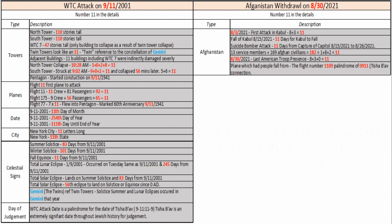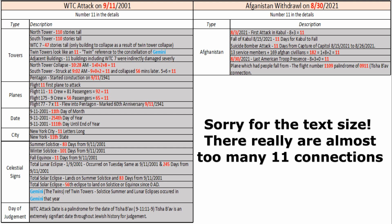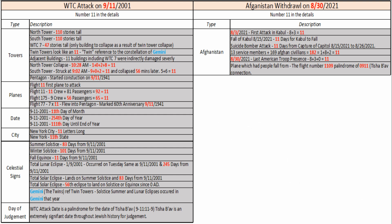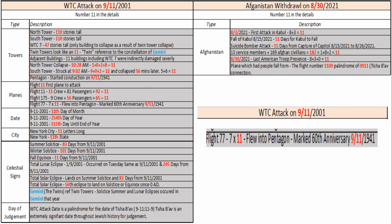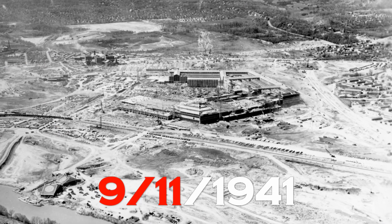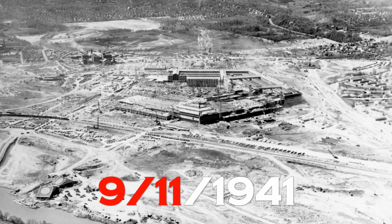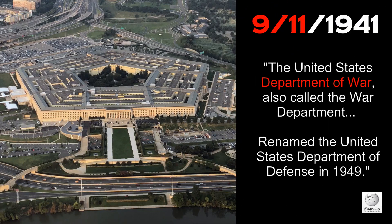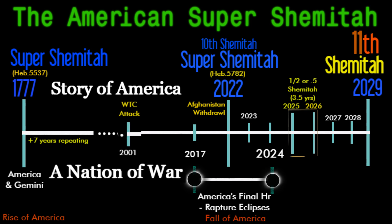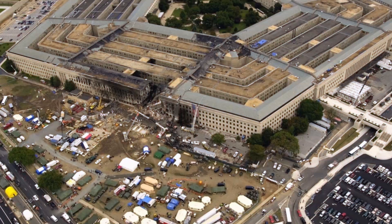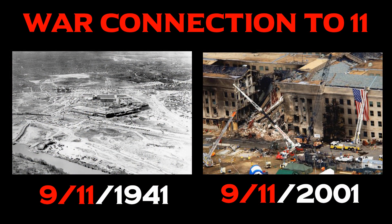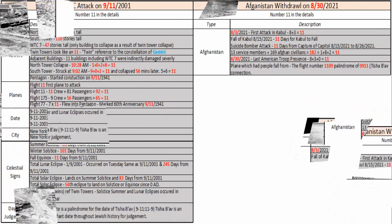There are two details I want to highlight. First, 9/11 is the same date as the anniversary of the construction of the Pentagon — the headquarters for the United States Department of Defense, the building where wars are planned. This ties back to the overall theme of war. The third plane crashed into the Pentagon marking its anniversary, on Flight 77, which is seven times eleven.